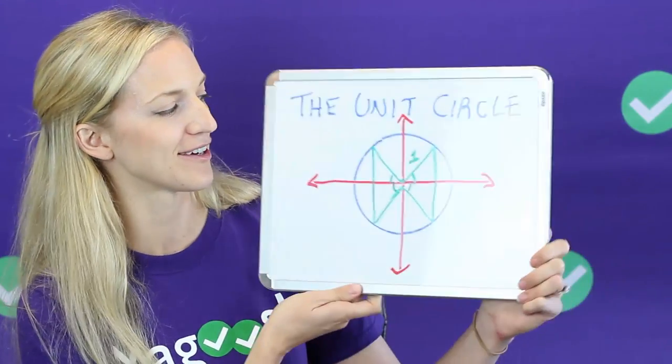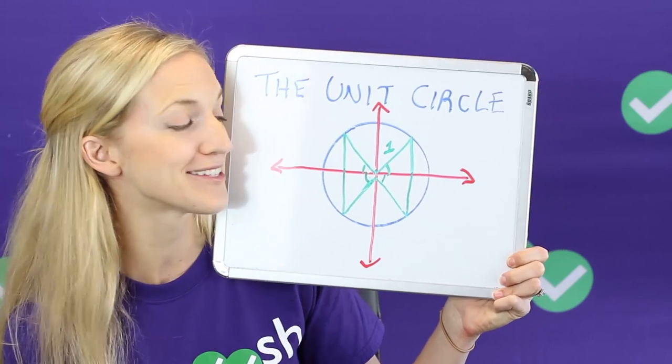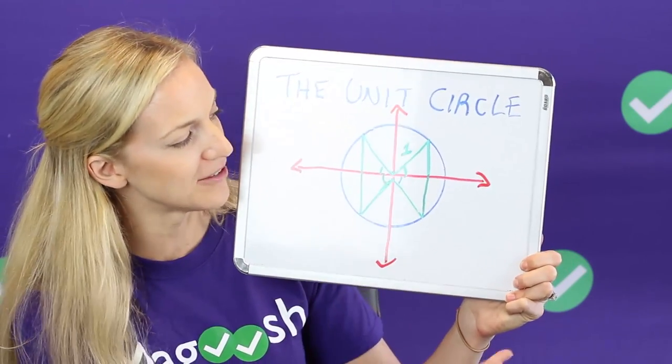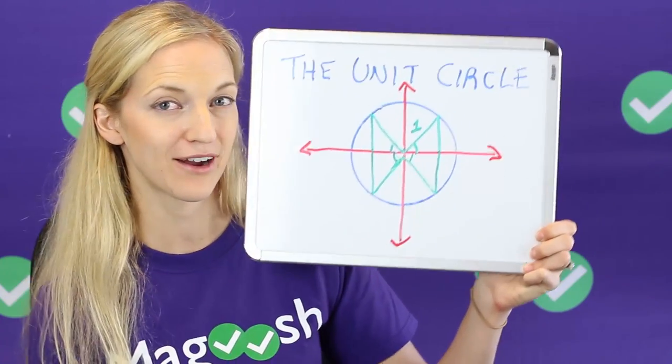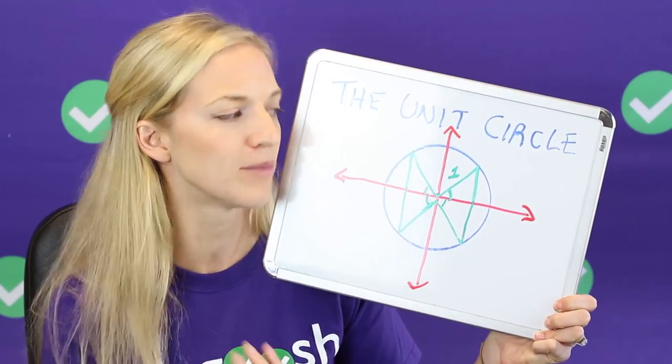So here is the unit circle. It's very lovely. It is a circle with a radius of one that we typically graph on the coordinate plane around the origin. Okay, so there are a few things that you need to know about the unit circle that are going to help you out so much on the ACT.